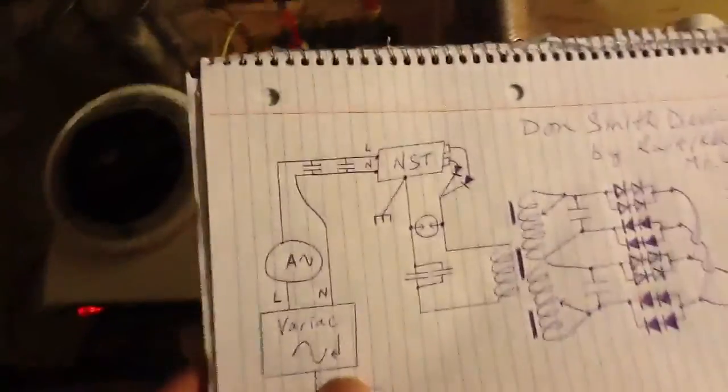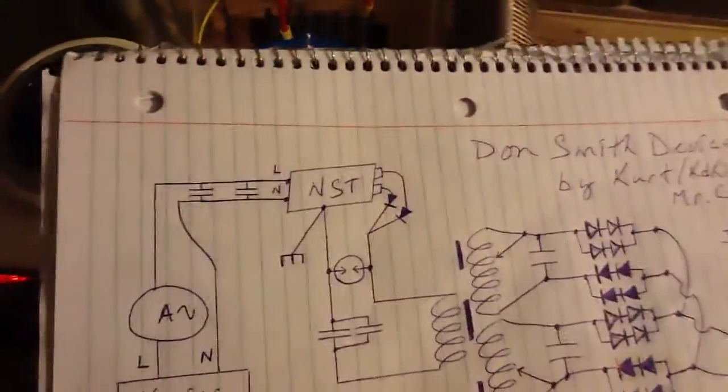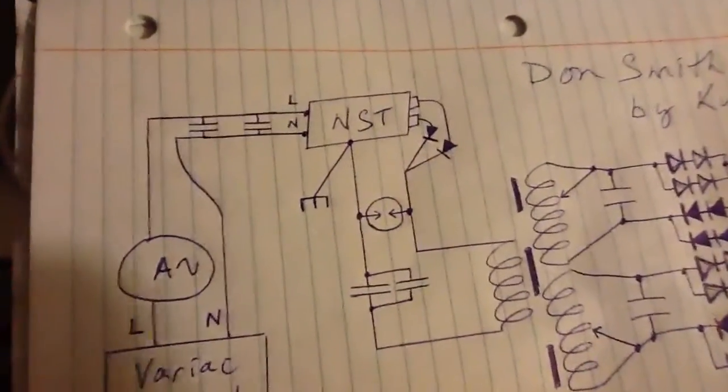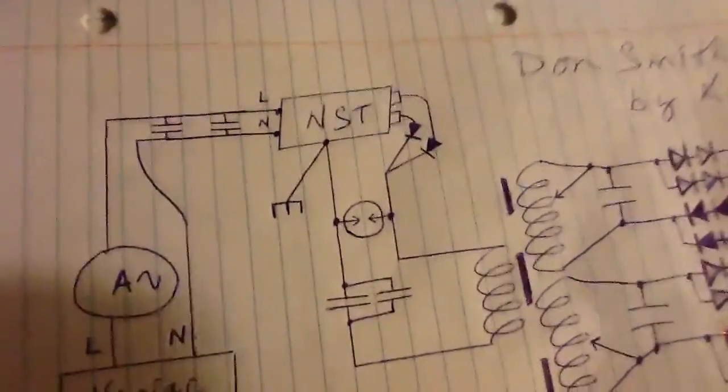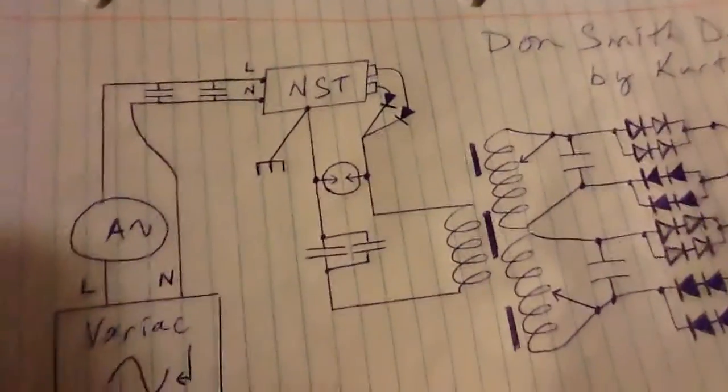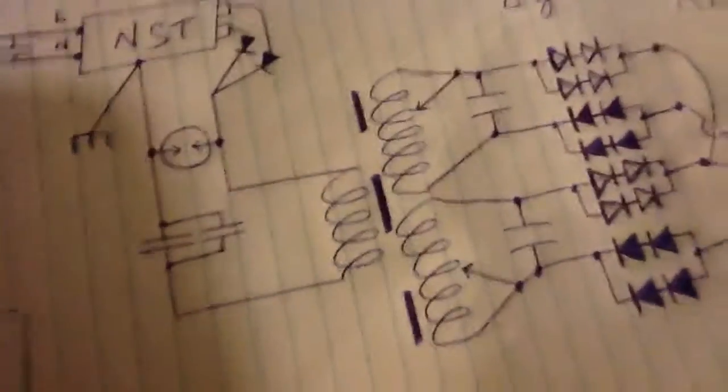We've got a variac going through an ammeter and tuning caps for 60 Hz. NST case grounded, which is the spark gap negative, and both high volt leads go to the positive diodes. That goes through the primary coil and out the spark gap there.